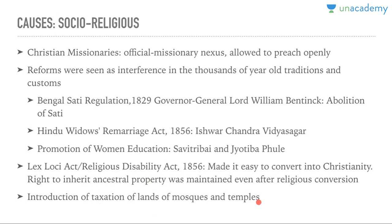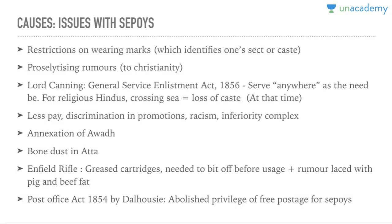There was the Religious Disability Act, also called the Lex Loci Act, which made it easy to convert to Christianity — earlier, ancestral property was not allowed upon conversion, but now one could inherit it even after religious conversion. Introduction of taxation on lands of mosques and temples was a very painful point. People were not allowed to wear marks identifying their sect or caste. There were rumors that army people were being changed to Christianity, and proselytizing was happening.